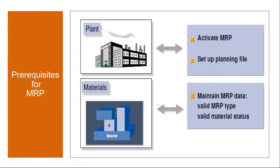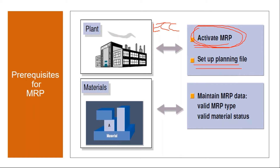Whenever you want to activate MRP, the first step in the system is you need to activate MRP. This is in ECC. Whenever a new plant is created and if you want to run MRP for that plant, you need to activate MRP as the first step. And then you have to set up the planning file entries.